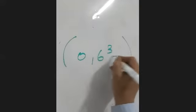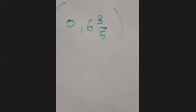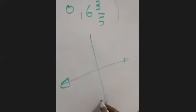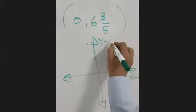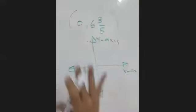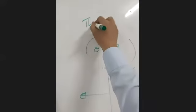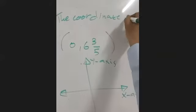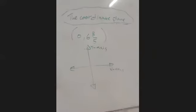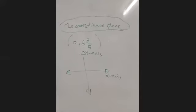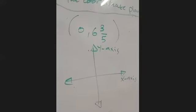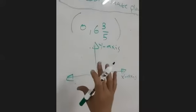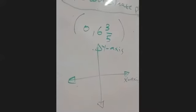We have the point (0, 6 and 3/5). We need to know which axis this point is located on. We know we have what we call the coordinate plane. We have an x-axis and a y-axis. The point is either on the x-axis or on the y-axis, and we need to determine which one.